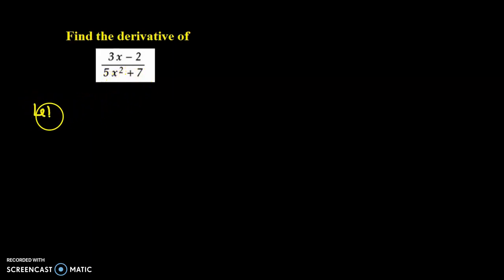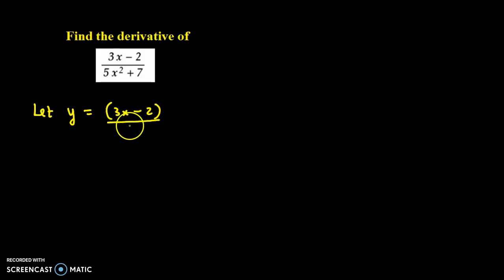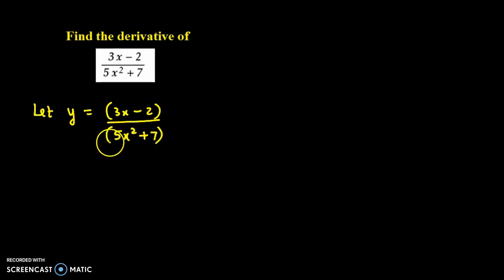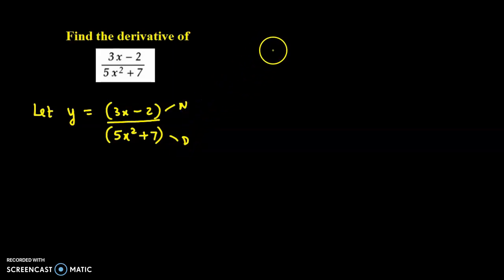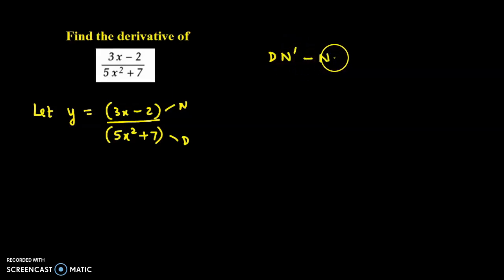So let us name this function as y. Let y be equal to (3x minus 2) upon (5x squared plus 7). Now we use the quotient rule. This is the numerator and this is the denominator. The quotient rule is: denominator into derivative of numerator, minus numerator into derivative of denominator, upon denominator squared.